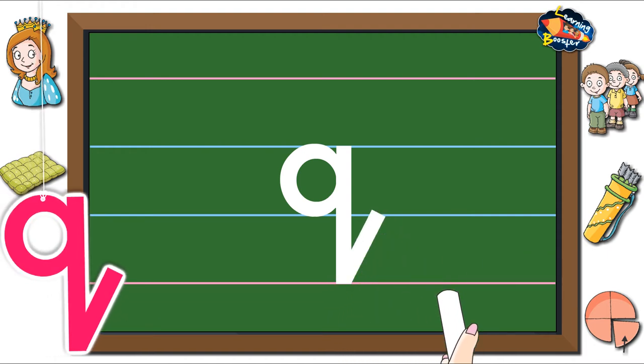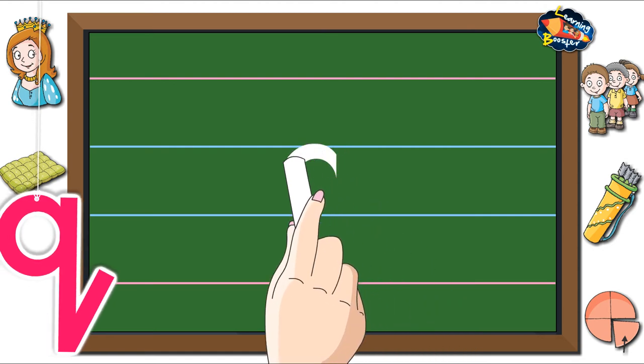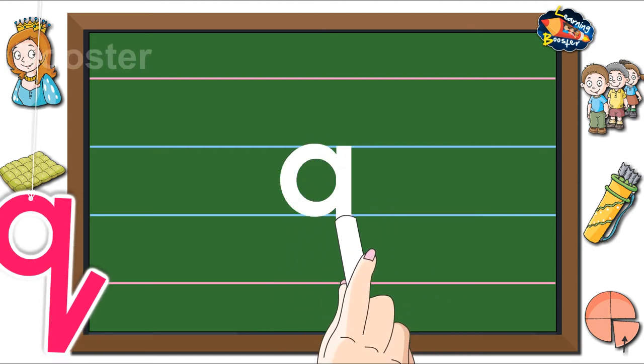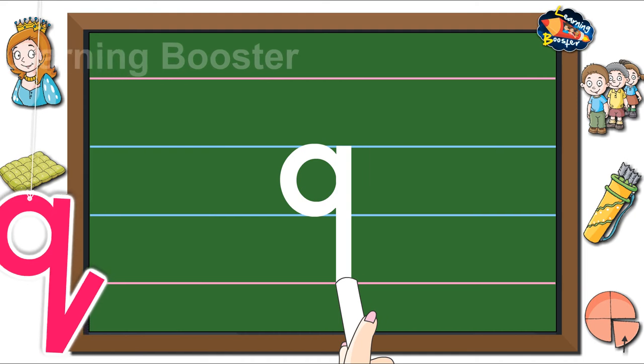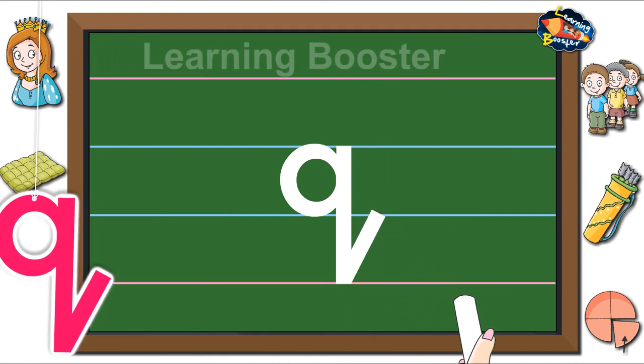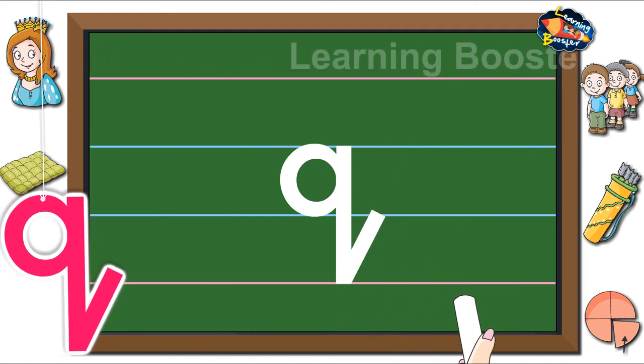Let us look at it once more. One curve and a standing line down with a hook tail to the right makes letter Q.